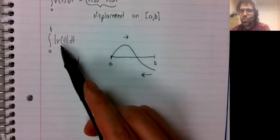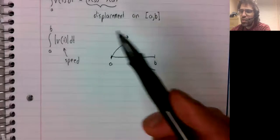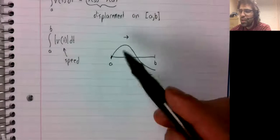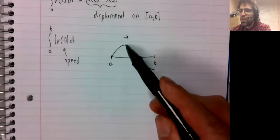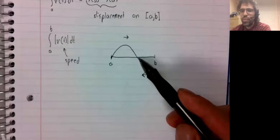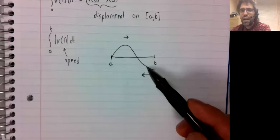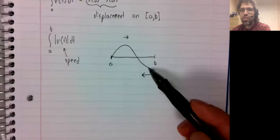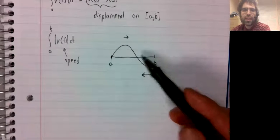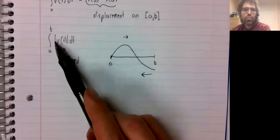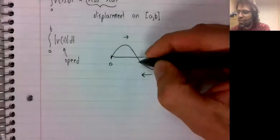The absolute value of the velocity is going to leave this alone, but it's going to affect this. When the velocity is negative, the absolute value will make it positive.